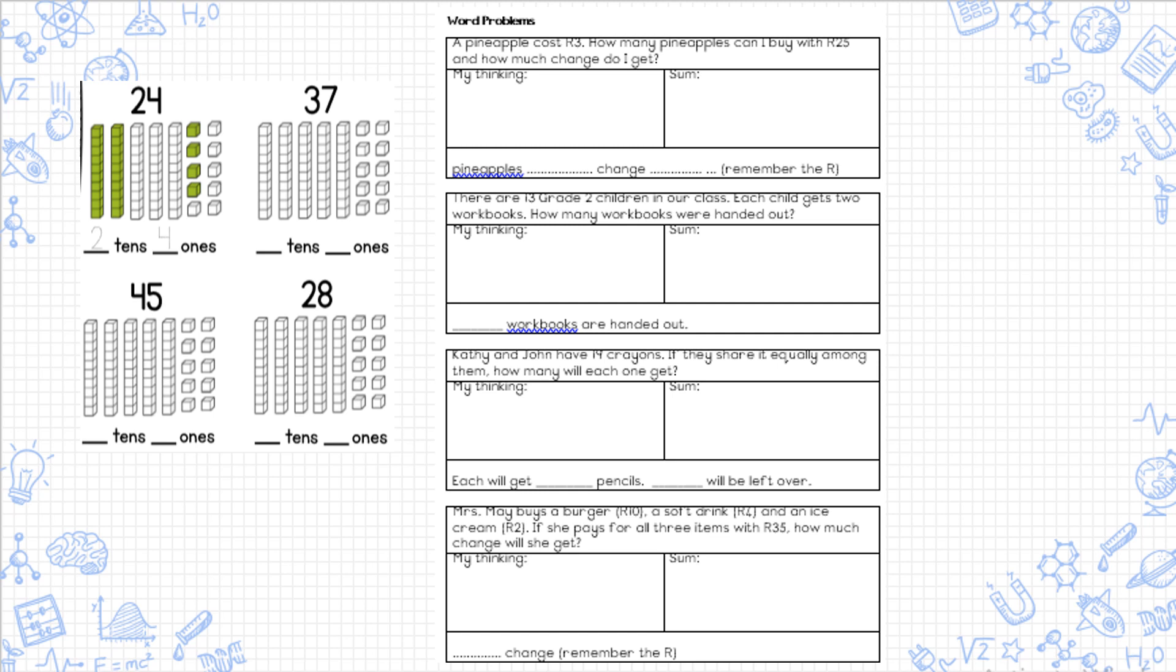Next it says there are 13 grade two children in our class. Each child gets two workbooks. How many workbooks were handed out? Think: is my answer going to be more or less? What type of sum are you going to do for this one?